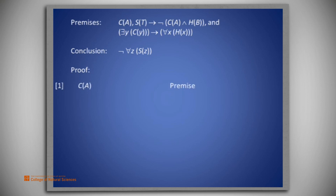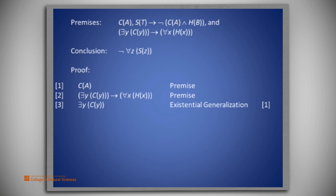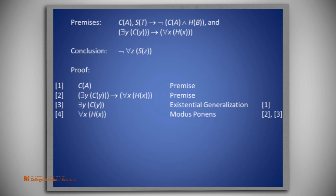On line 1, we place our first premise, c(a). And let's place premise 3 on line 2: there exists a y such that c(y) implies for all x, h(x). The antecedent of the implication in line 2 is there exists a y such that c(y). To obtain that, we existentially generalize line 1 to say there exists a y such that c(y) on line 3. Now we can use modus ponens on line 4 to get for all x, h(x). Then the x in line 4 can be universally instantiated to b to produce h(b) on line 5.